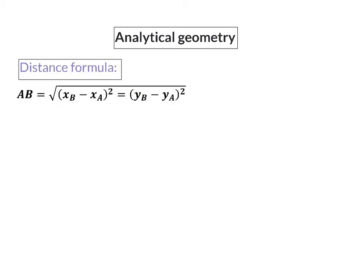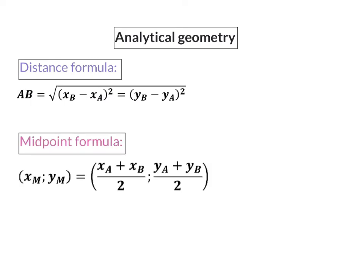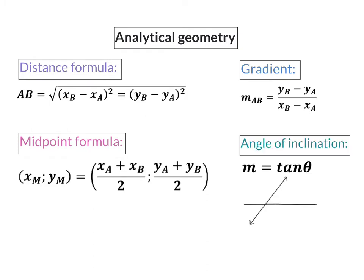Let's have a look at the formulas that we already know. Firstly, we know the distance formula, then the midpoint formula — which calculates the coordinates of a point exactly in between two others — and our gradient formula. In grade 11 we also added the inclination angle formula: the angle that any line forms with the horizontal line, measured anticlockwise.